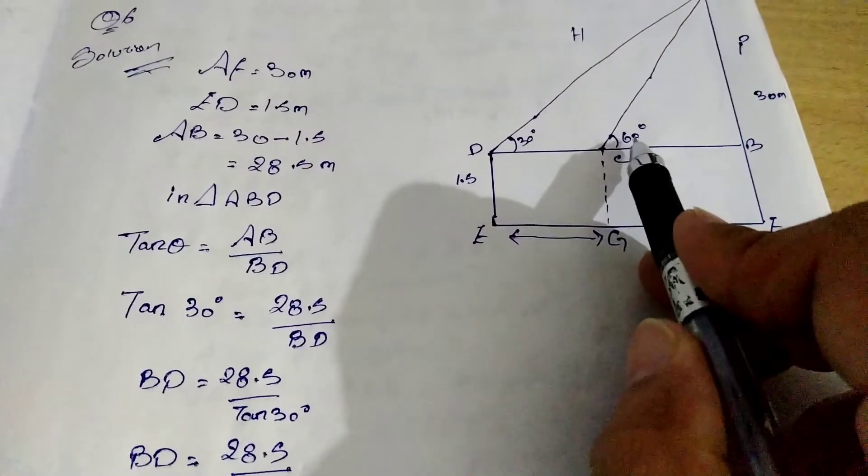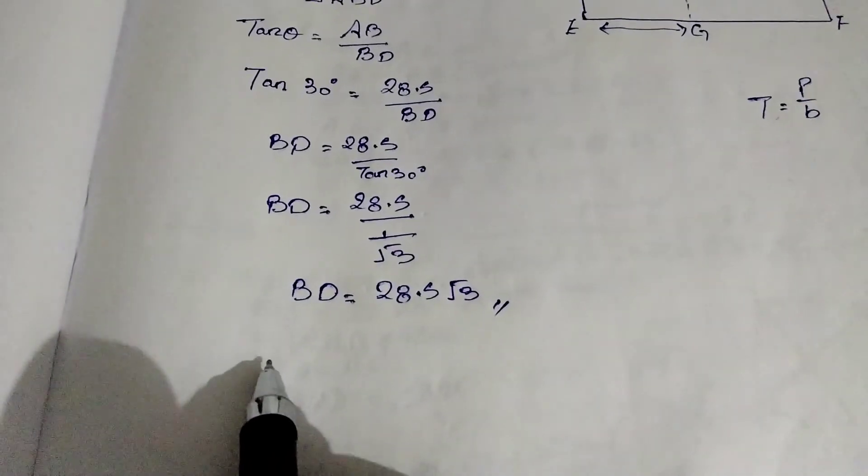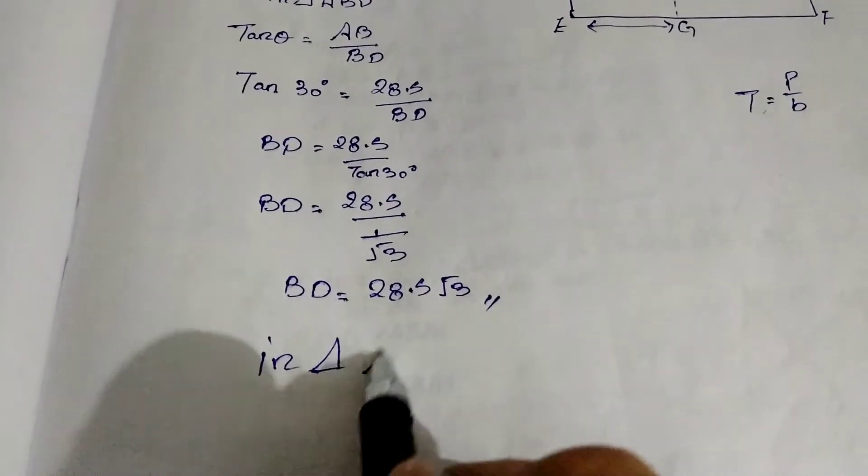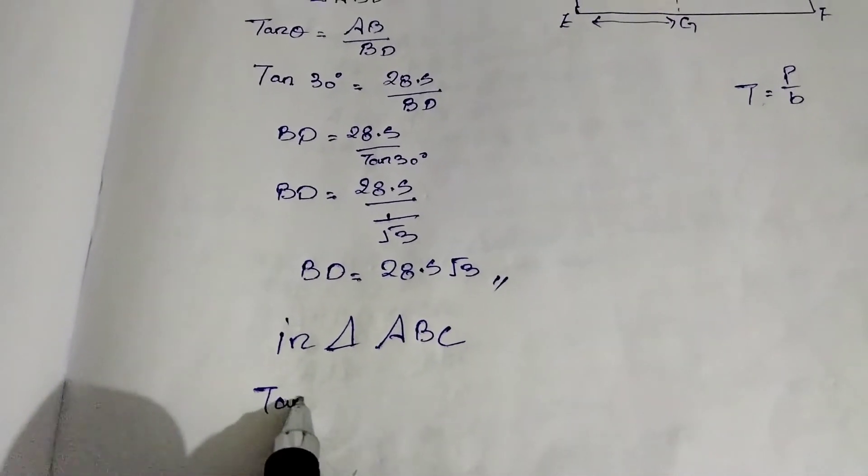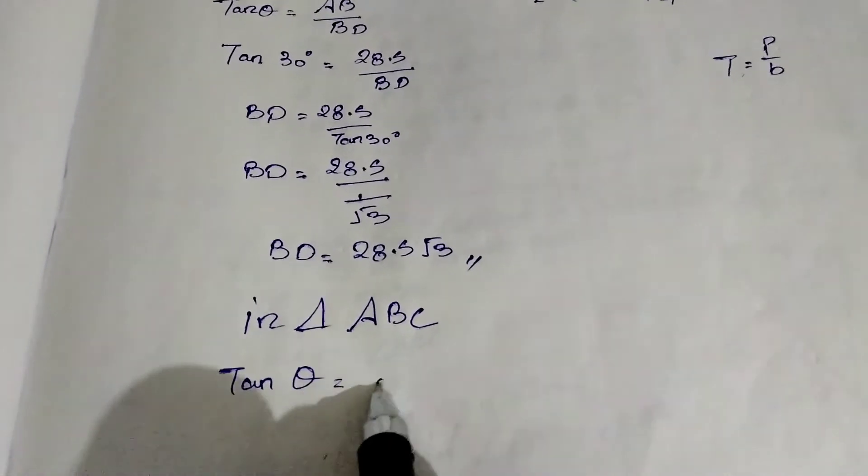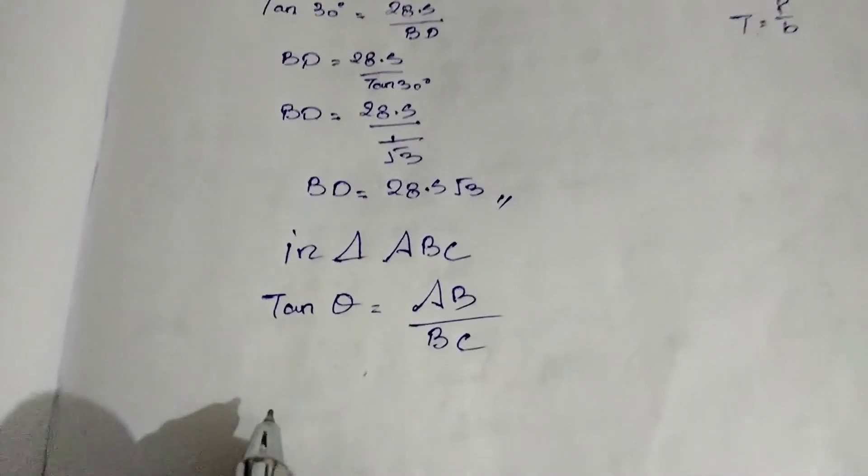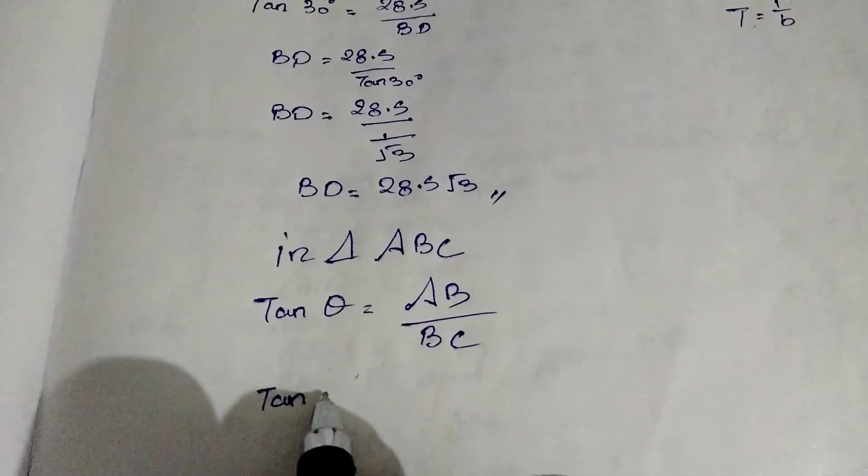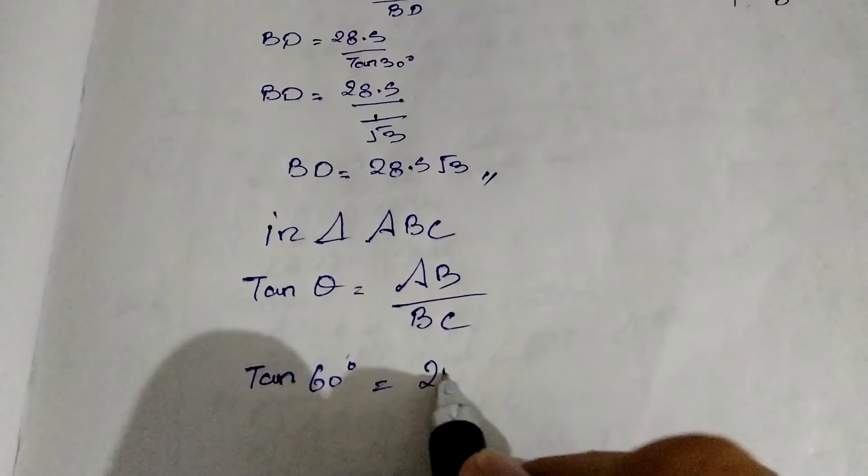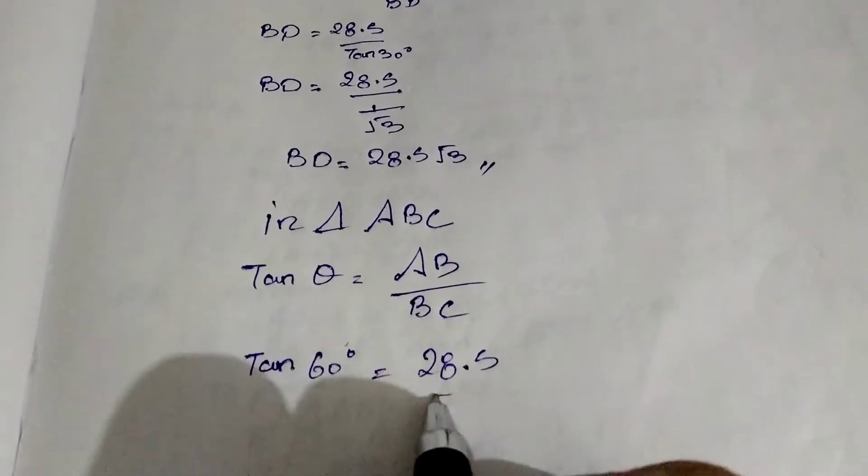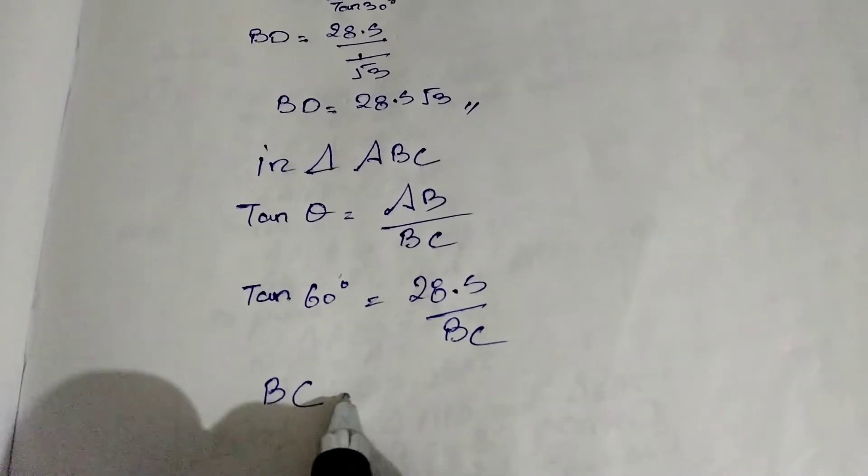Now, let's find this angle C, 60 degree. So let's find BC. In triangle ABC, tan theta equal to AB by BC. Tan 60 degree, AB we have 28.5, by BC. BC we will bring it this side because we are going to find BC.